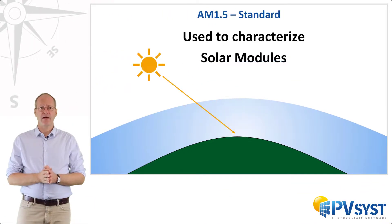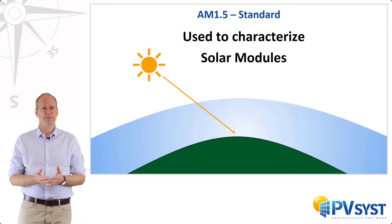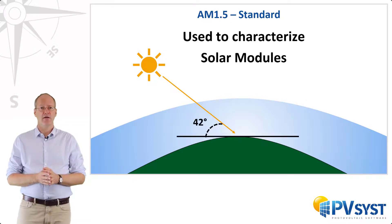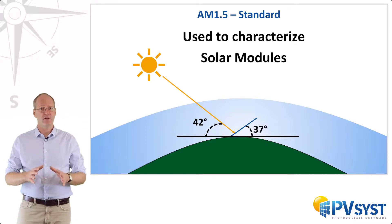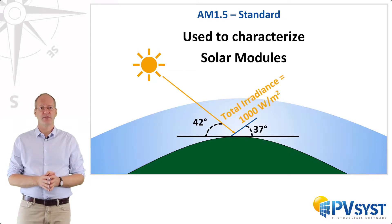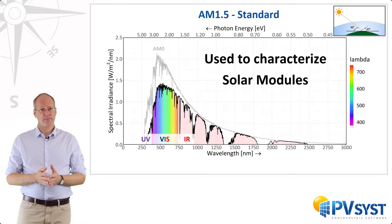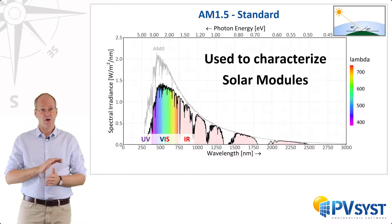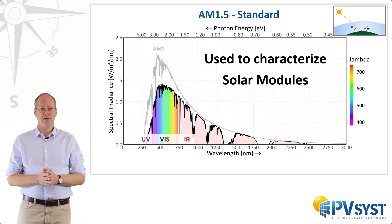An air mass of 1.5, or AM 1.5, has special significance because it is used as a standard in photovoltaic engineering. AM 1.5 occurs when the sun height is 42 degrees and there is a clear sky. The standard also assumes that the plane of incidence is tilted at 37 degrees towards the sun. With these conditions, the total irradiance is 1000 watts per square meter. The AM 1.5 spectrum is shown here. It is important to stress that AM 1.5 is just a standard used in photovoltaics for characterization — it is not the spectrum that a solar panel sees at all times.